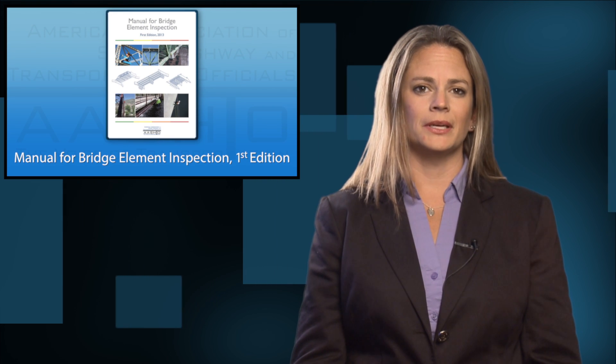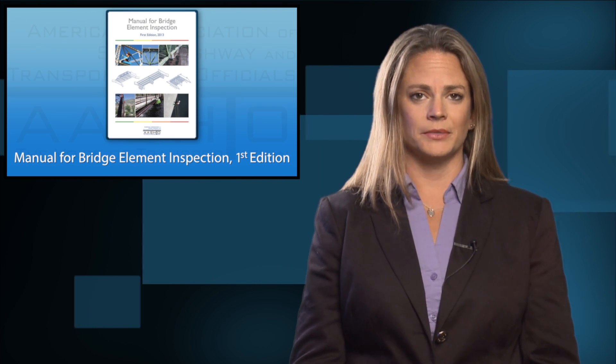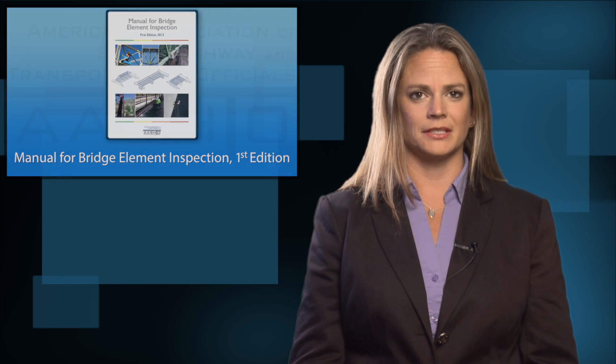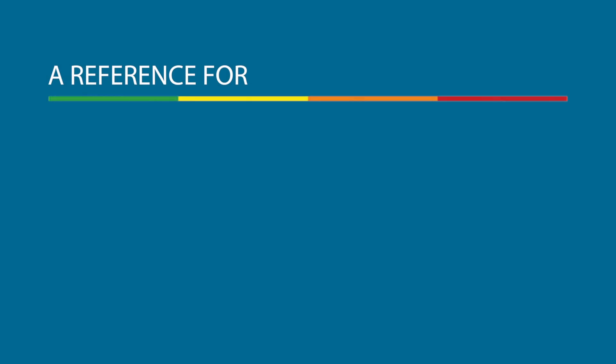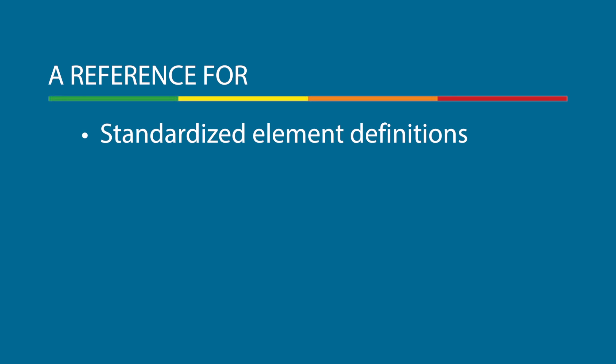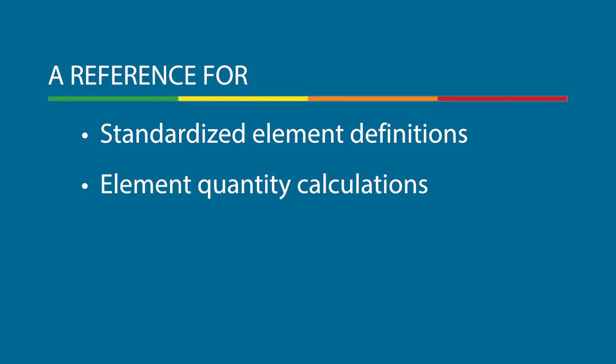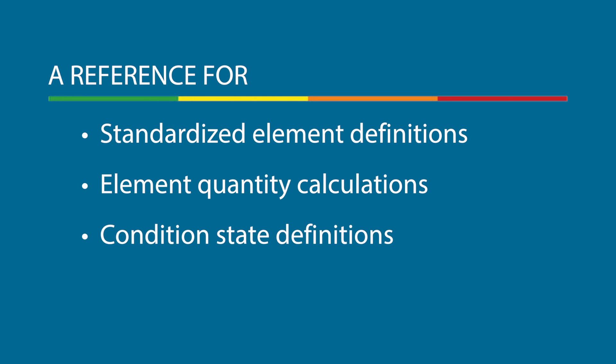This new manual, which has been designed for use by State Departments of Transportation and other agencies that perform bridge inspection, is a reference for standardized element definitions, element quantity calculations, and condition state definitions. Its purpose is to help practitioners evaluate the condition of bridges in a simple, effective way that can be standardized nationwide while providing enough flexibility to be utilized by both agencies large and small.